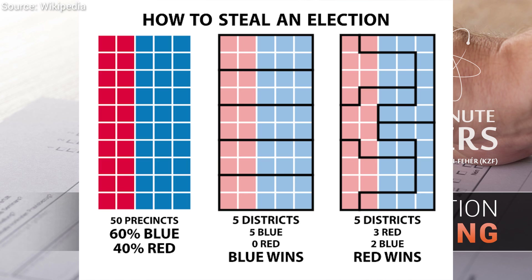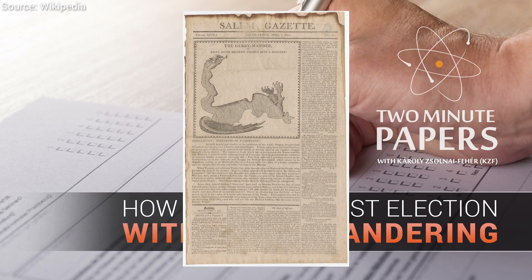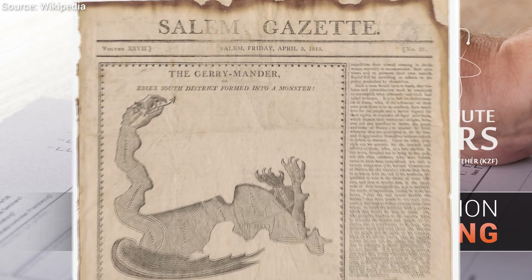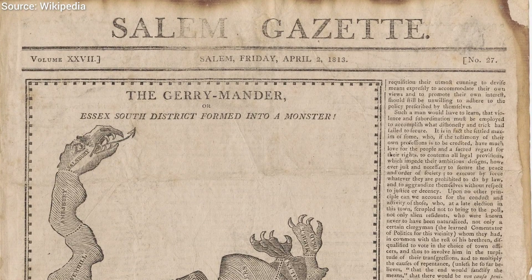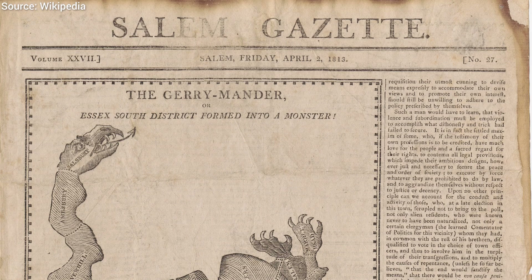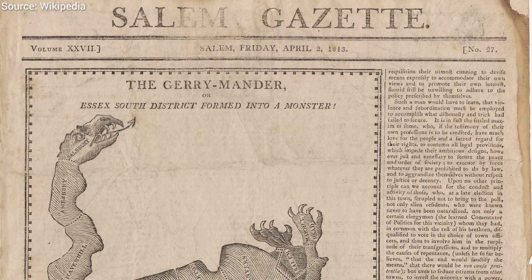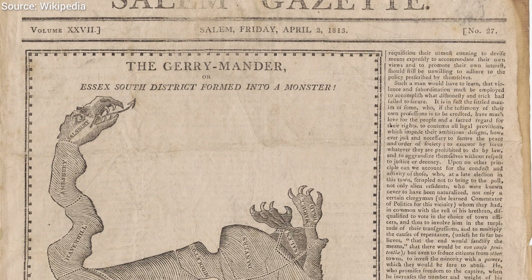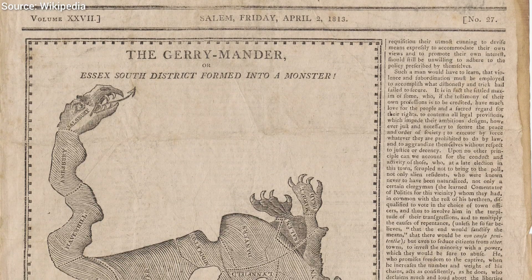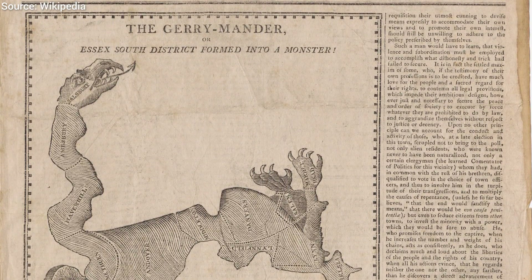And now we have ceremoniously arrived at the definition of gerrymandering, which is the process of manipulating electoral district boundaries to turn the tide of an election. The term originates from one of the elections in the USA in the 1800s, where Governor Elbridge Gerry signed a bill to reshape the districts of Massachusetts in order to favor his party. Understandably, all the papers and comic artists were up in arms about this bill.